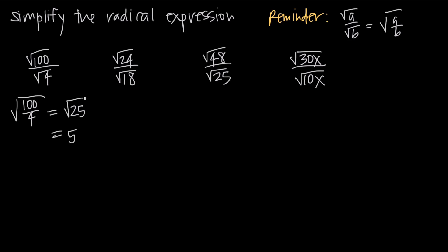Or we could deal with each square root separately. Instead of bringing 100 and 4 into one square root, we deal with them individually. The square root of 100 is 10, and the square root of 4 is 2, so 10 over 2 equals 5. Notice that in both cases we get the same answer — 5 — because it works either way as long as we do the math correctly. So use whichever method is easiest for you.